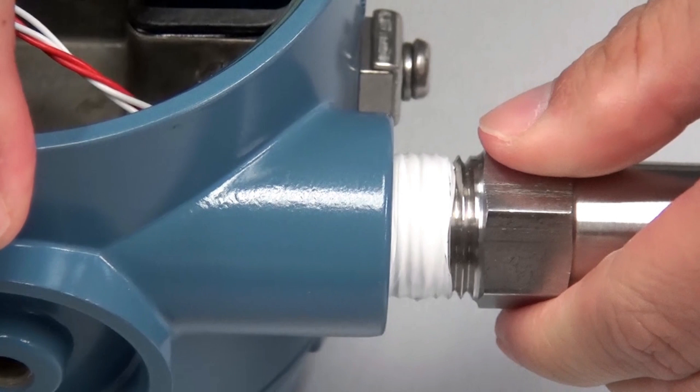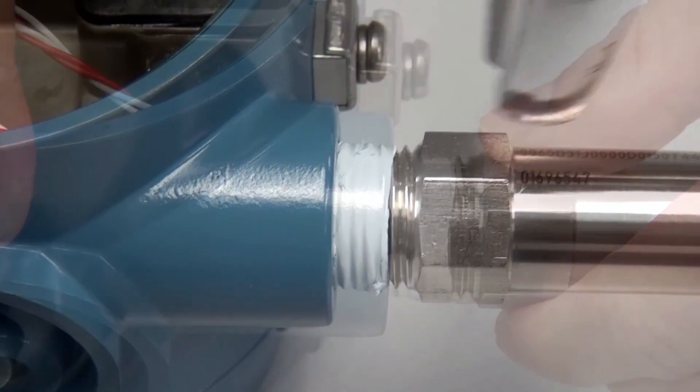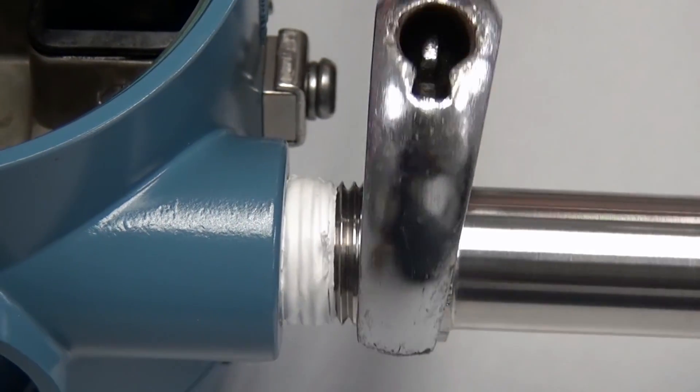Applying sealant to the sensor threads beforehand is a recommended practice. Use a wrench to tighten the sensor to local standards.